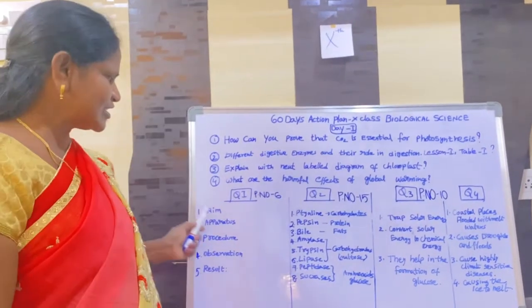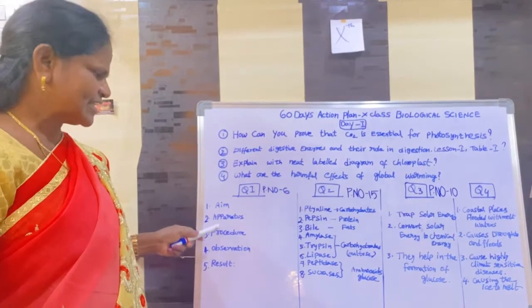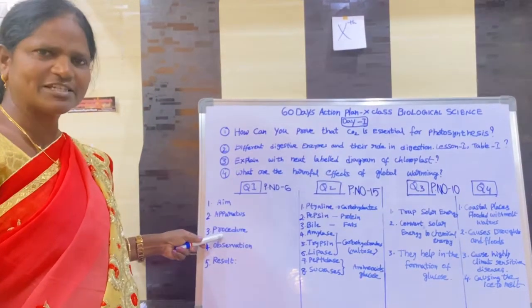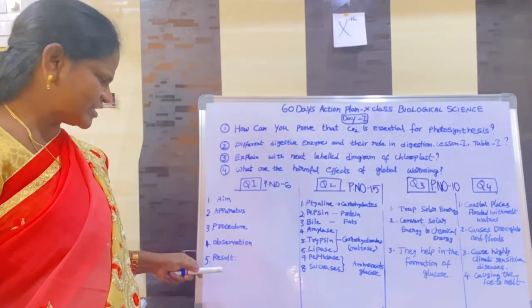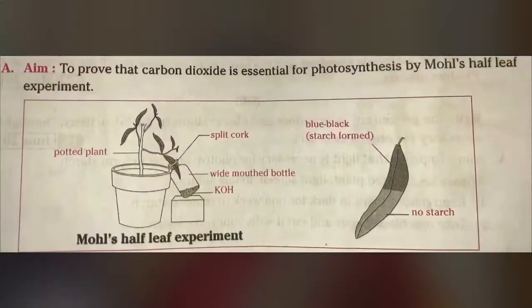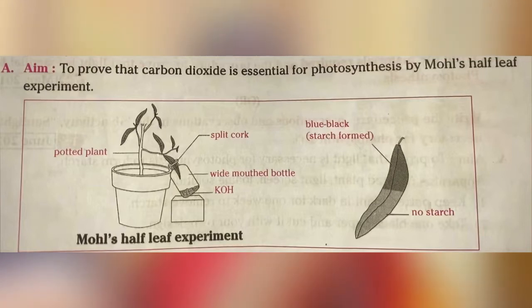Aim: to prove that carbon dioxide is essential for photosynthesis by Mott's half leaf experiment.